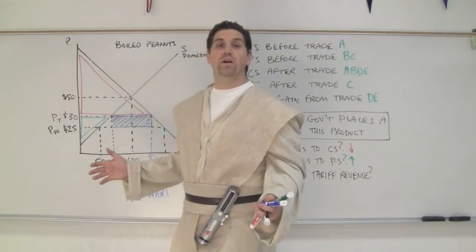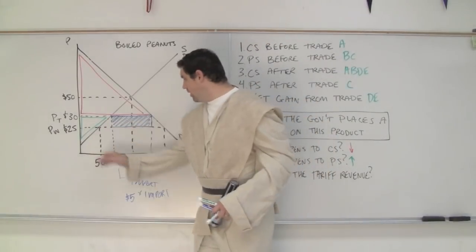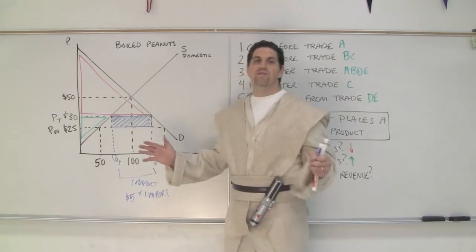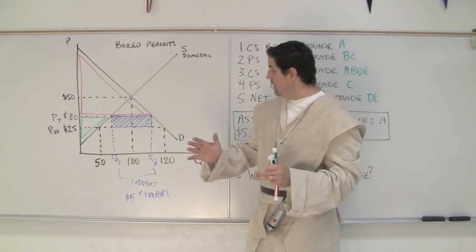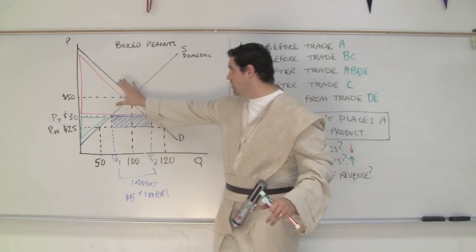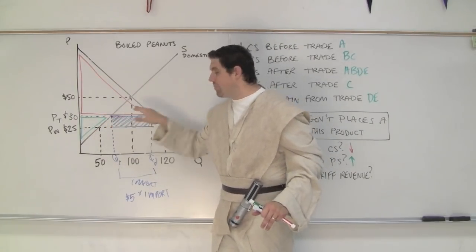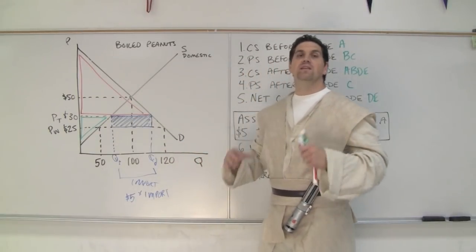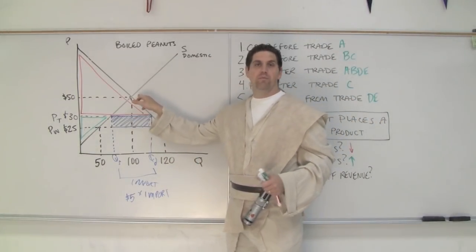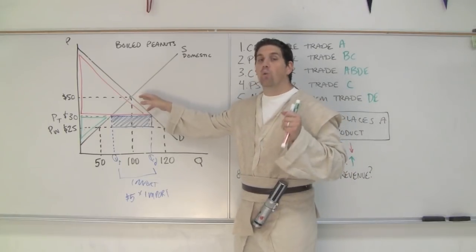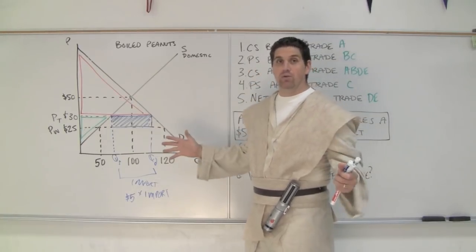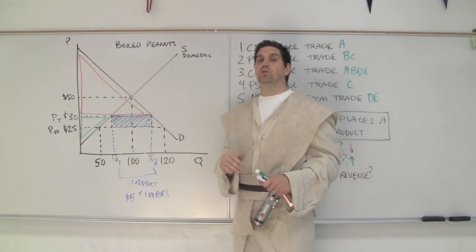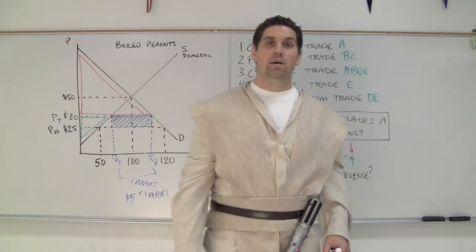This video also talks about quotas. A quota is the same concept. At PW we used to bring in 70 units from other countries. If the government says that's too much and decreases it to only a smaller amount, the result would be the same graph — consumer surplus would get smaller, producer surplus would get bigger — except with a quota, there would be no tariff revenue. Consumer and producer surplus is maximized at equilibrium, but if we can buy things at a lower world price, total surplus actually gets bigger. International trade benefits consumers and hurts domestic producers. Hopefully that makes sense — may the econ be with you.